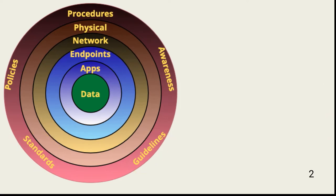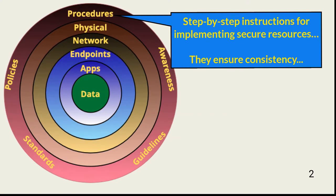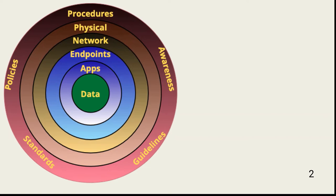Procedures are step-by-step instructions for achieving security tasks that comply with standards and guidelines. They ensure consistent application of what is expected to manage risk. Policies, standards, guidelines, and procedures are ineffective if all affected users are either unaware of them or confused on how to apply them.